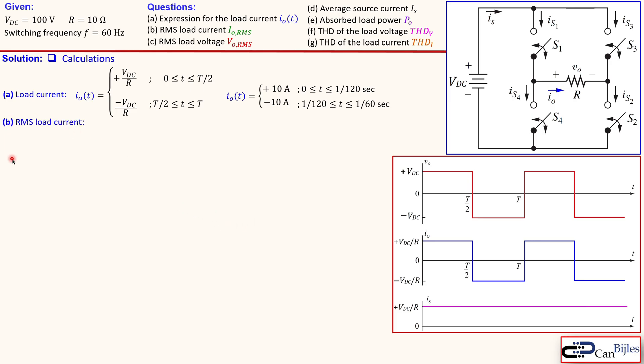Now that is question A. Question B is about the RMS load current. This is the expression for the RMS value. This is a general formula. And now specifically for the load current. Now if we now substitute here also that we have two parts because from starting 0 to T over 2 and then from T over 2 to T. So we need to have two separate parts. And then substitute the values from here.